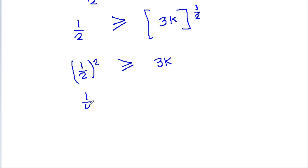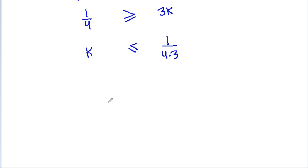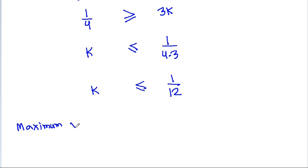From 1/4 greater than or equal to 3k, we get k less than or equal to 1/12. Therefore, the maximum value of k is 1/12.